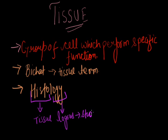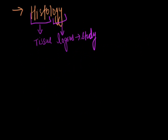So the branch of science which deals with the study of tissue is known as histology. In plants and animals, tissues are formed, but these tissues have different functions. Tissues are of two types: plant tissue and animal tissue. Today we discuss about the plant tissues.